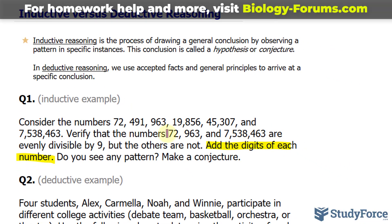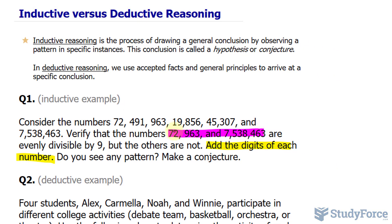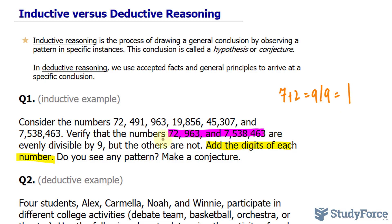Let's assume that we don't know any of these numbers are divisible by 9. Instead, what we can do is add up the digits that make up each number. For example, 7 plus 2 makes 9, and dividing this by 9 gives us an output of 1. Given that this output is an integer, we can make the assumption that 72 is also divisible by 9, which it is — it gives us 8.